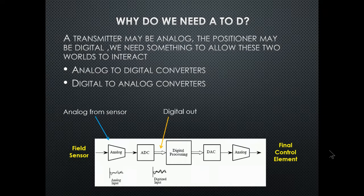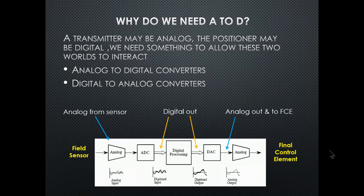The digitized signal appears as dots — basically ones and zeros. Then the digital output goes through the DAC — digital to analog converter — and then analog out to the final control element. If you compare the output to the input it's quite different. We'll talk about scan times because we want the output to be as accurate as possible relative to the input.